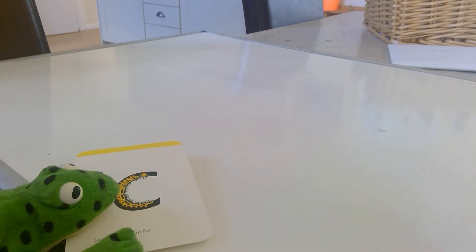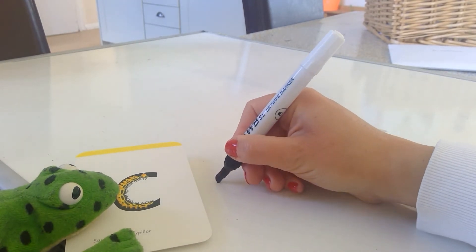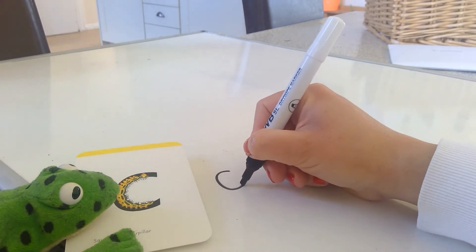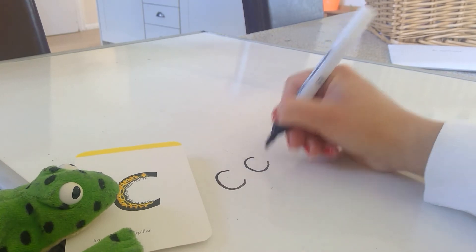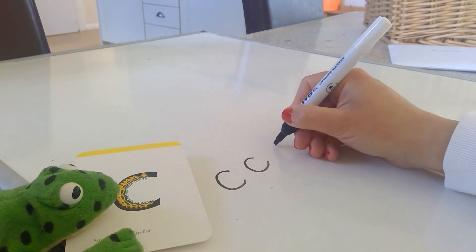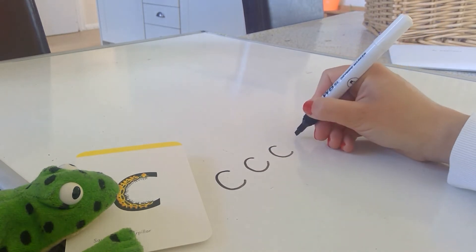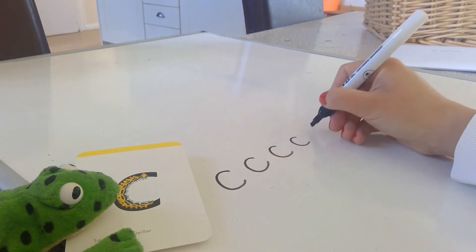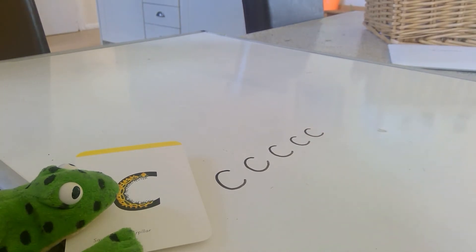We're now going to practice our third letter family, and this one begins with C for Caterpillar. We go curl around the caterpillar. Ck, ck. Your turn.